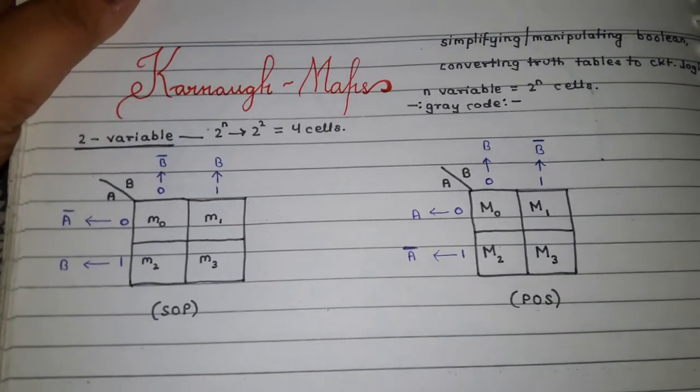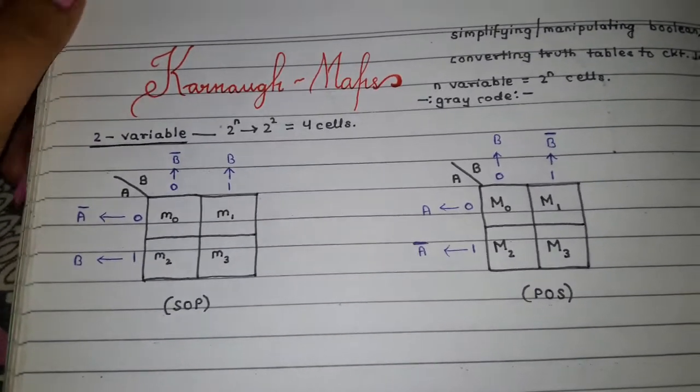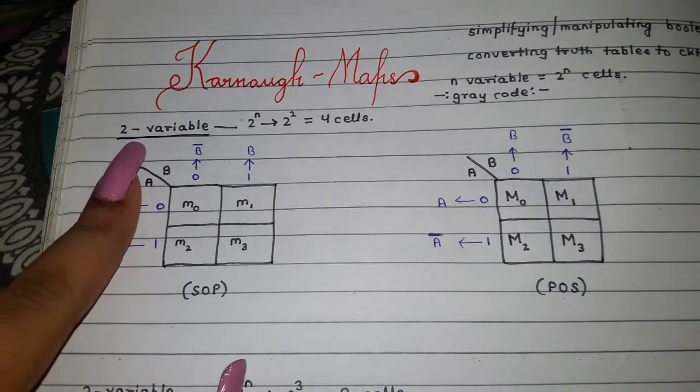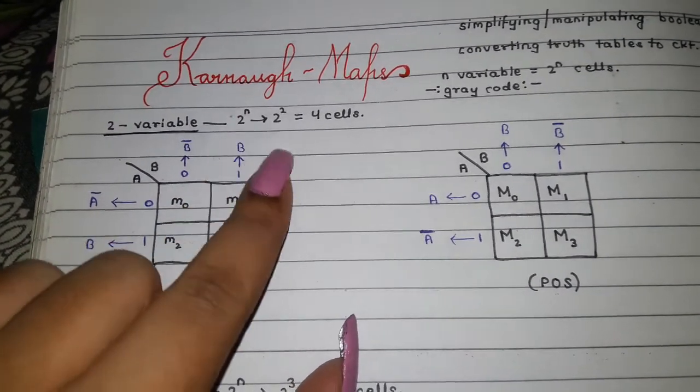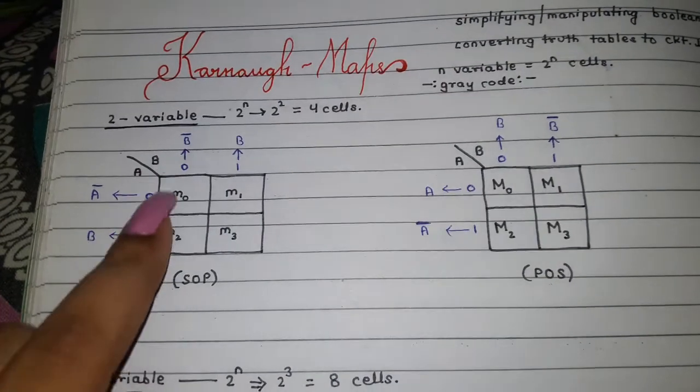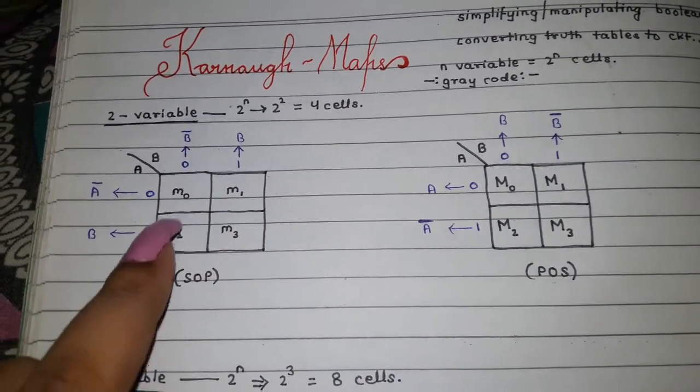Since it's two variables, the number of cells would be 2^2 or four cells. Here you draw four cells: one, two, three, and four. As you can see, there are four cells.